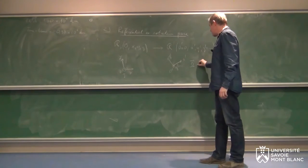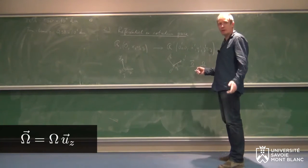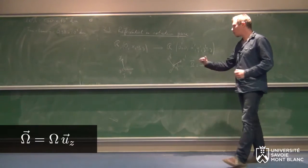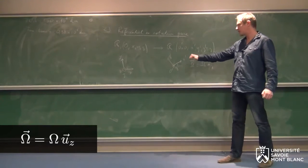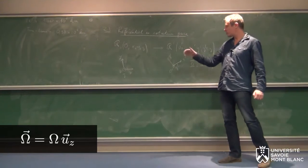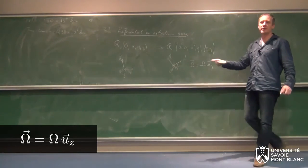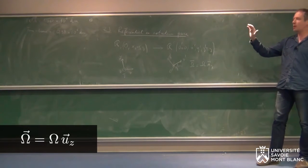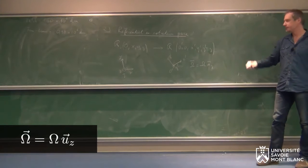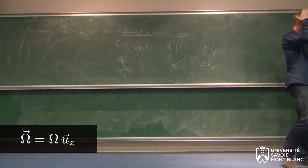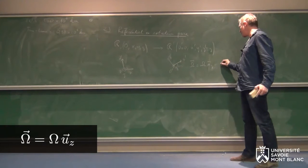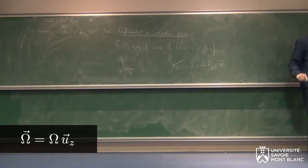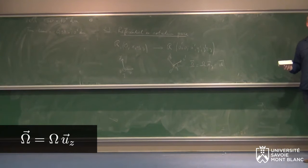Je vais appeler ω le vecteur rotation de R' par rapport à R, et ça je vais le noter ω fois Uz. Le vecteur rotation est dirigé dans la direction de Z, qui est aussi la direction de Z'. Règle de la main droite : ça tourne dans le sens inverse des aiguilles d'une montre. Je vais de plus faire l'hypothèse que ω est constant, c'est-à-dire que la vitesse de rotation ne change pas au cours du temps. On a donc un référentiel qui tourne autour d'un autre à vitesse angulaire constante.